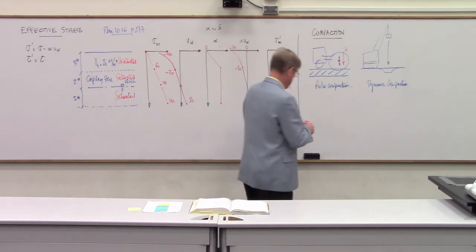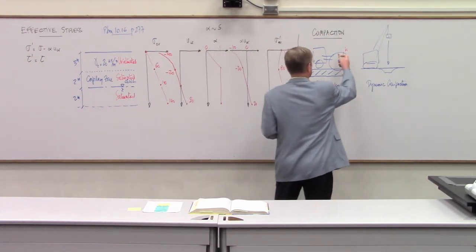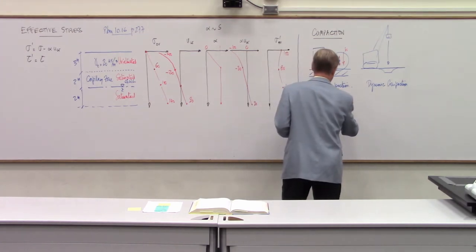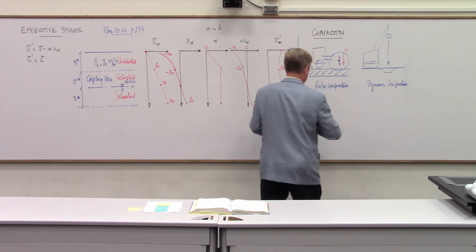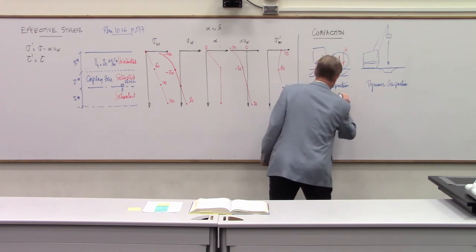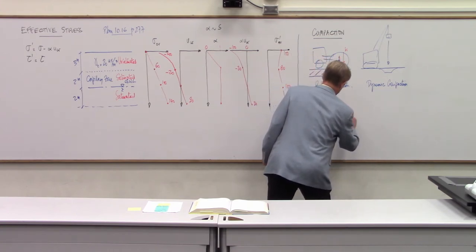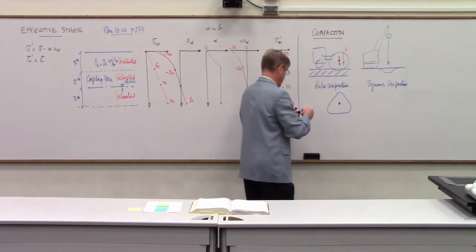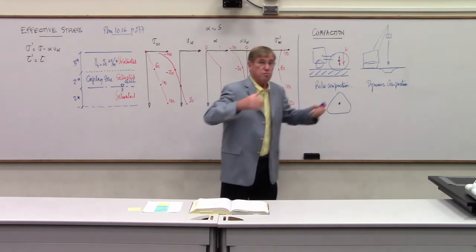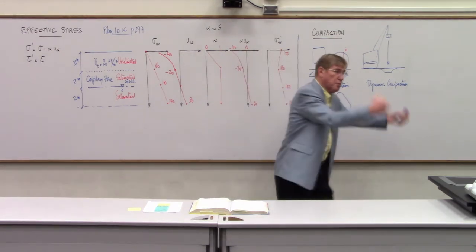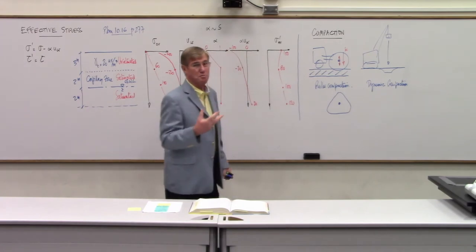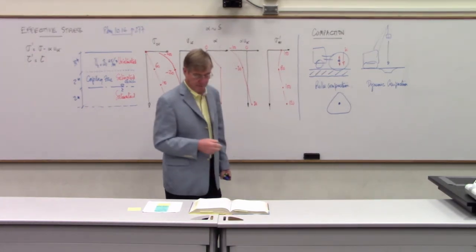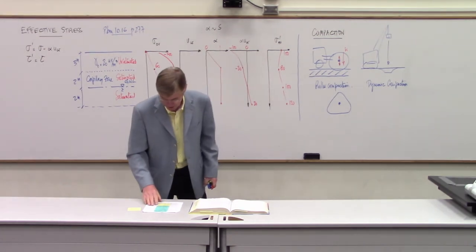Sometimes you'll see rollers that are not circular - this is called uneven compaction. The roller could have a triangular shape, rotating and impacting the ground repeatedly: boom, boom again. This way you have a larger impact and can compact deeper layers, though it is not as continuous.